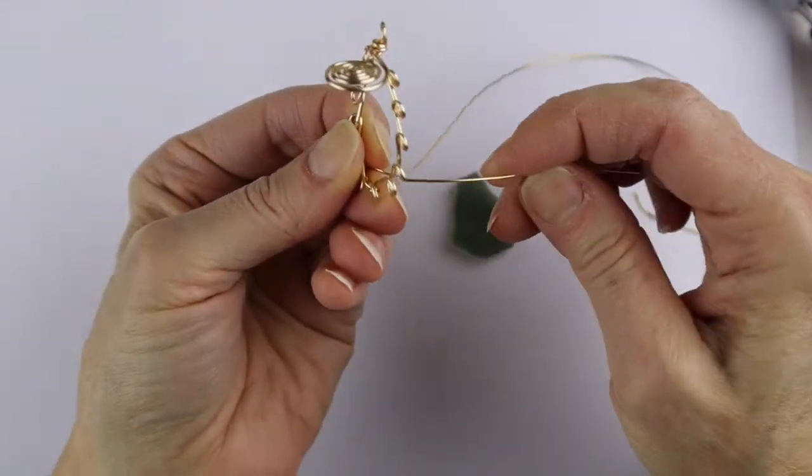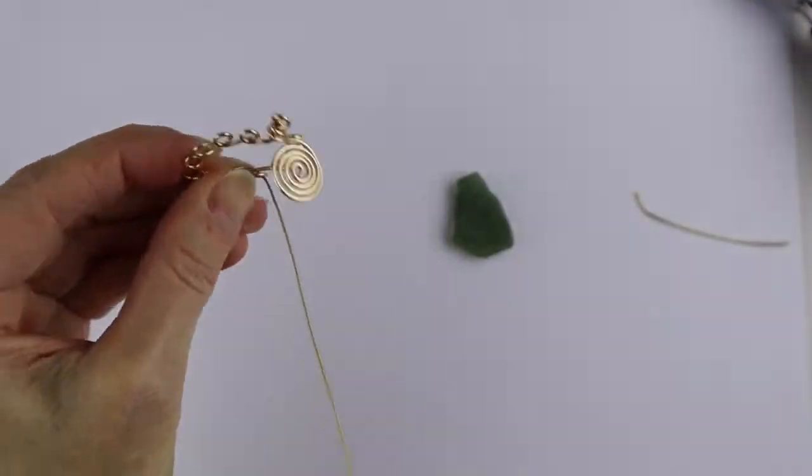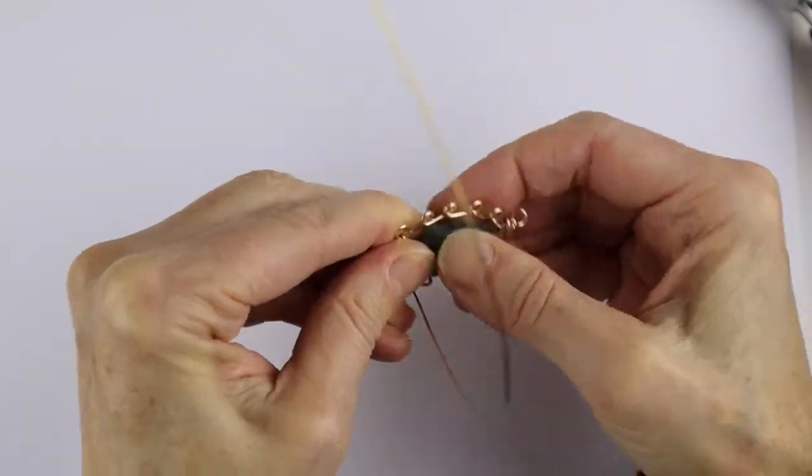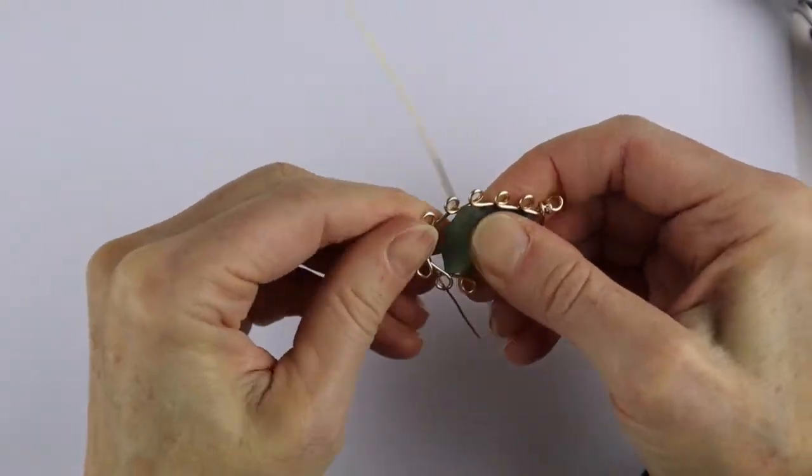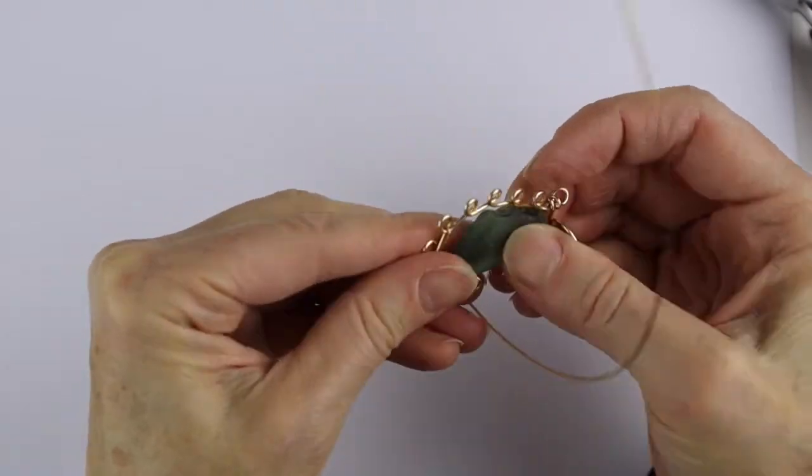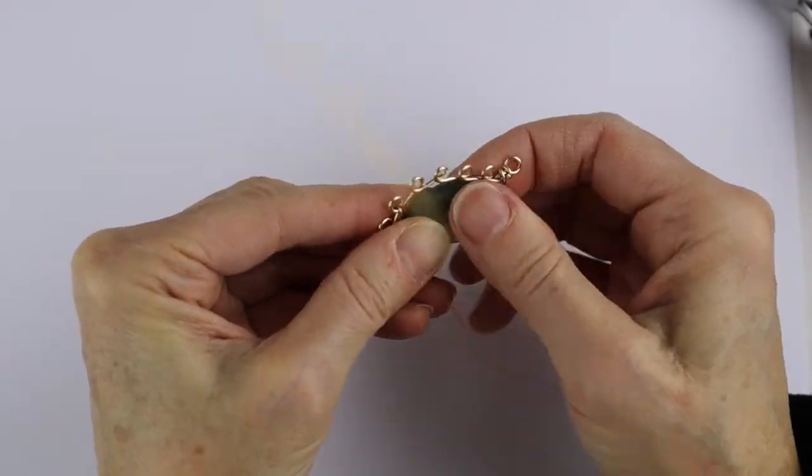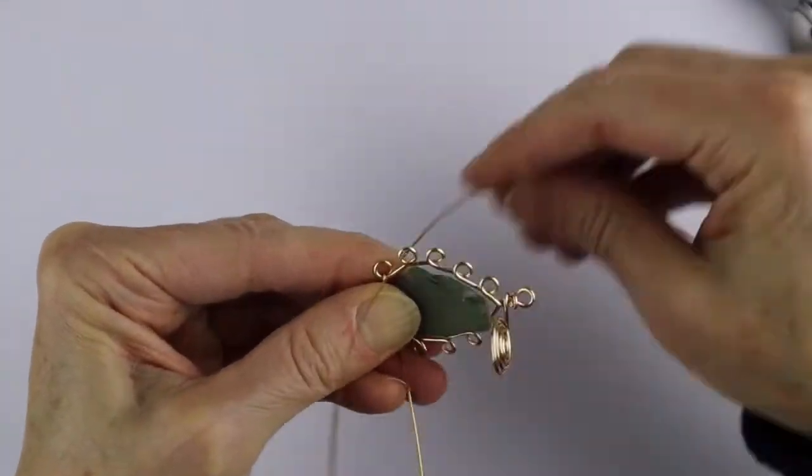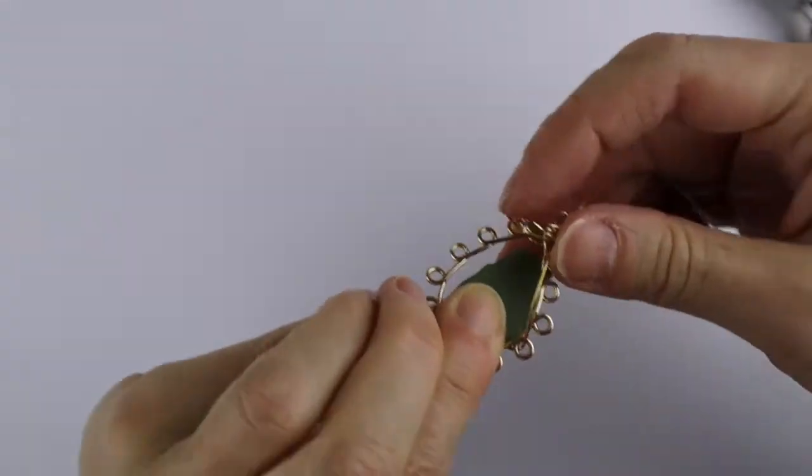So you're going to actually just kind of sew it, weave it through those little loops. Once you've done a couple at the bottom, insert your glass and fit it around like that, and then take the end of your wire once it's all fitted around how you like.